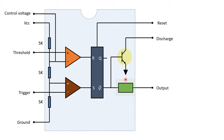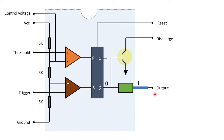The next stage is the output. The Q-bar terminal of the flip-flop is connected to the output block. This block is basically an inverter which inverts the output from the flip-flop — it gives output 0 if Q-bar is 1, and 1 if Q-bar is 0. The output pin number 3 can sink and source 200mA of current. The use of this inverter results in the same output at pin 3 as at the Q output of the SR flip-flop.